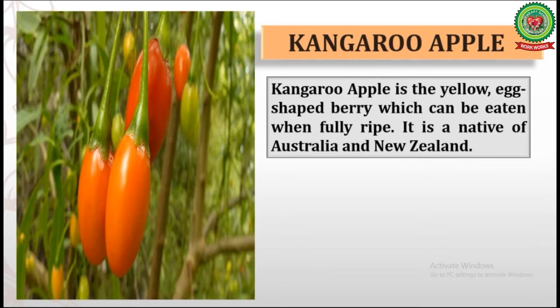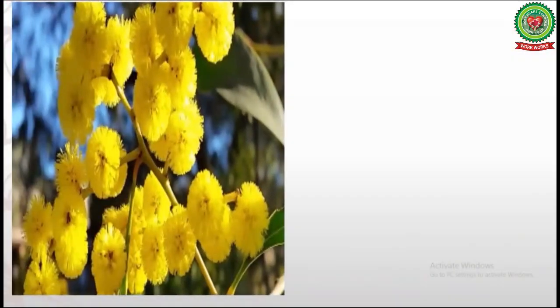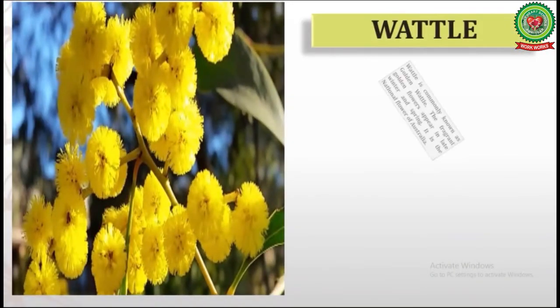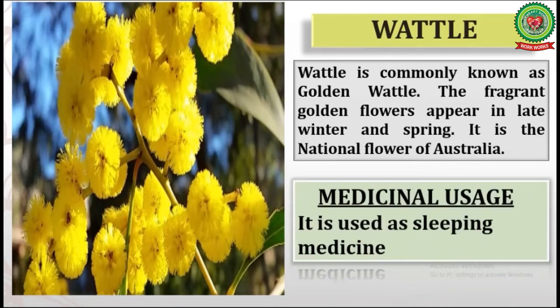Number one is Kangaroo Apple. Kangaroo Apple is the yellow egg-shaped berry which can be eaten when fully ripe. It is a native of Australia and New Zealand. Medicinal usage: it is used to treat achy joints and wounds. Number two is Vettel, commonly known as Golden Vettel. The fragrant golden flowers appear in late winter and spring. It is the national flower of Australia. Medicinal usage: it is used as sleeping medicine.